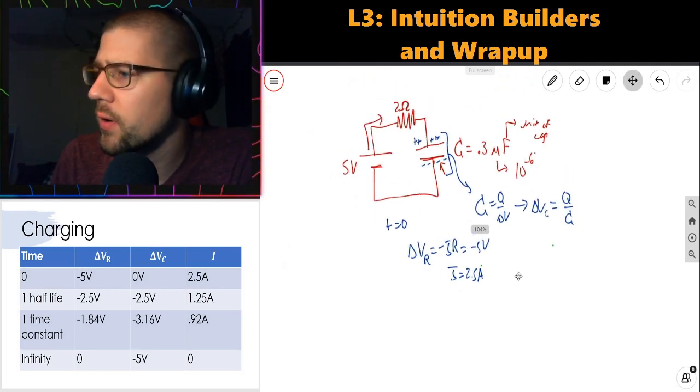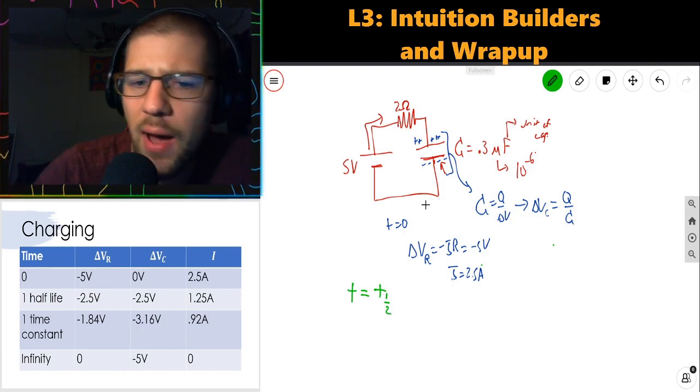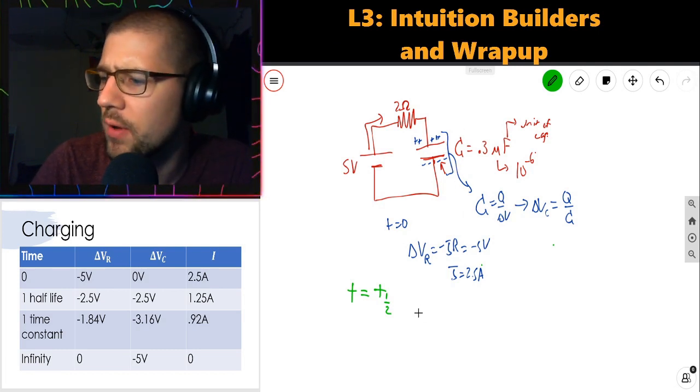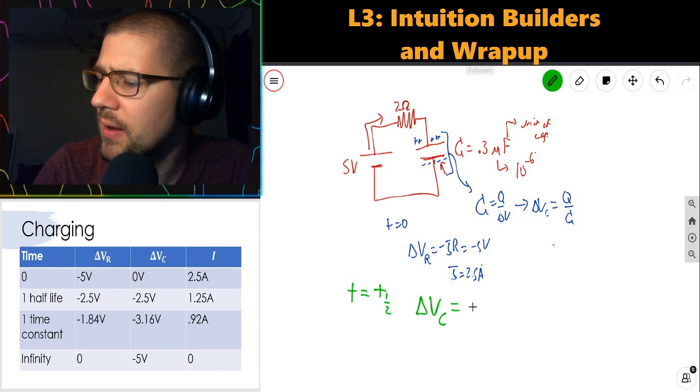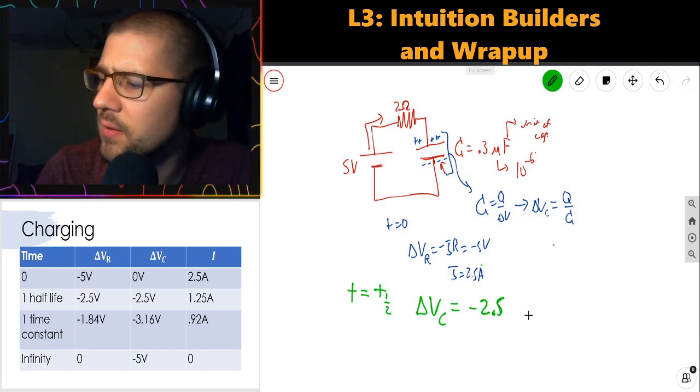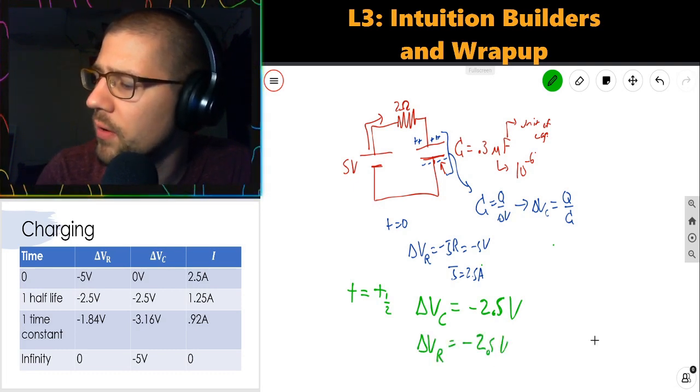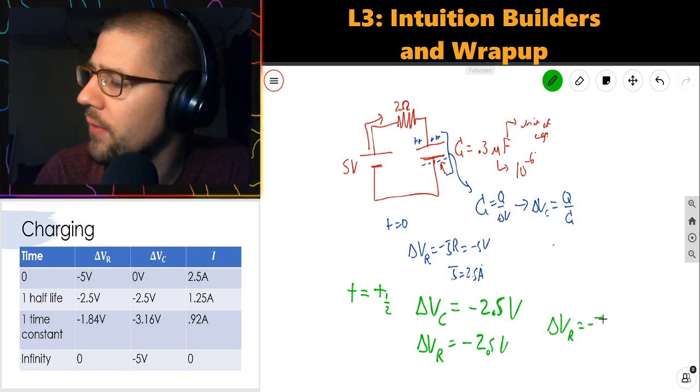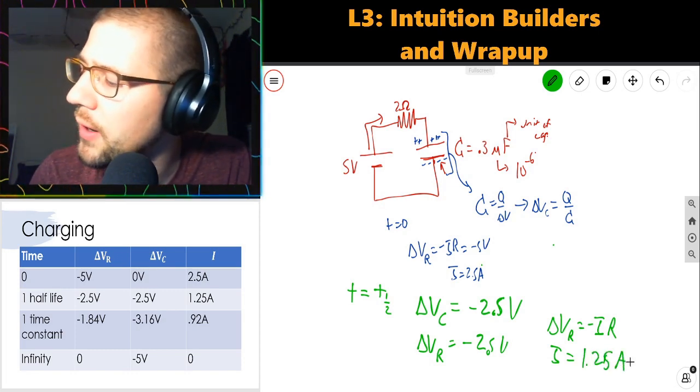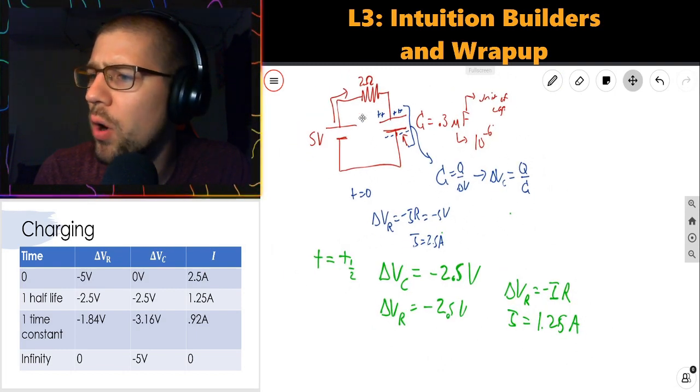So let's dial time forward a little bit. Let's dial time forward 1 half life. At T equals T 1 half, the capacitor is going to be halfway to its final value, halfway to its final voltage of 5 volts. So the change in voltage across the capacitor is going to be negative 2.5 volts. That means there's 2.5 volts remaining for the resistor. And again, by Ohm's law, delta V resistor is negative IR, that means the current is going to be 1.25 amps through the circuit. So current is decreasing over time.